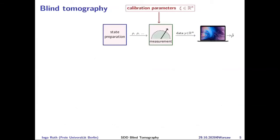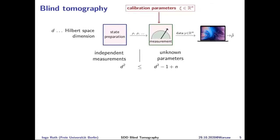In blind tomography, the calibration parameters and state should be inferred simultaneously. This will be a linear inverse problem, so we start by counting parameters. If D is the Hilbert space dimension, the number of independent measurements is basically d², while the number of unknown parameters is also of order d² for the state plus N additional calibration parameters. This is daunting.